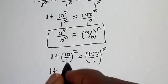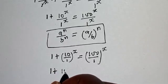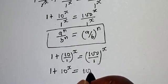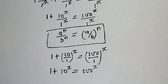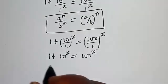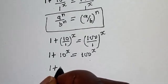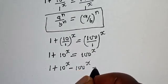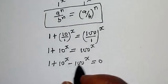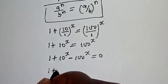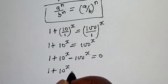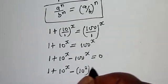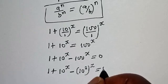Since 10 divided by 1 is 10, we get 1 plus 10 raised to power s is equal to 100 raised to power s. Rearranging, we have 1 plus 10^s minus 100^s is equal to 0.